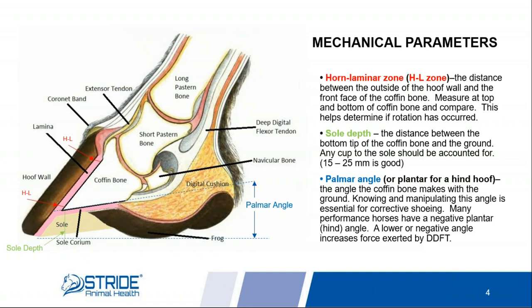Next, let's look at some of the mechanical parameters. The first is what we call the horn laminar zone, which in simple terms is the distance measured from the hoof wall to the face of the coffin bone. In a normal horse, if you measure that at the top of the coffin bone and at the bottom, that measurement should be almost the same — very close. If the coffin bone rotates downward, the horn laminar distance at the bottom will be greater than at the top, and that's how you determine if you've got rotation or not.